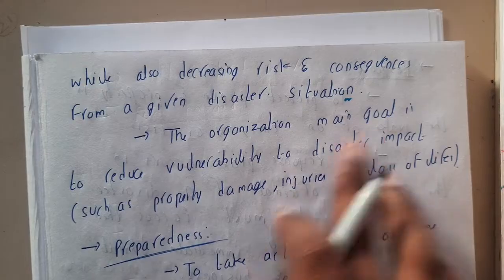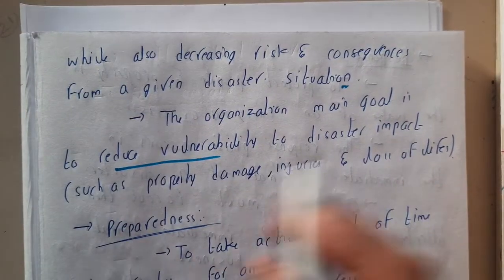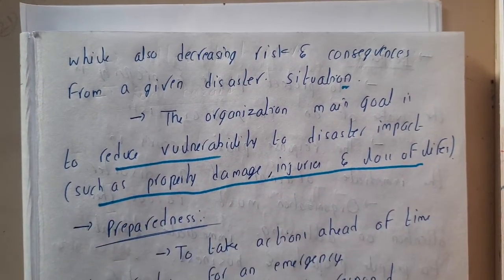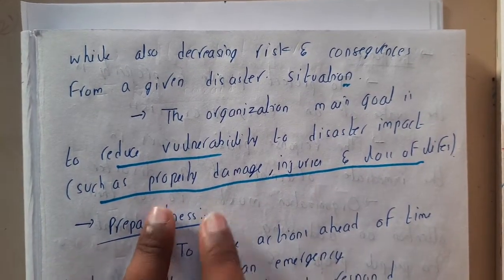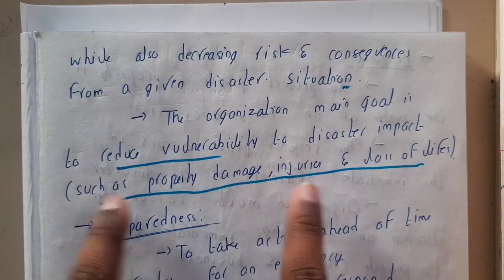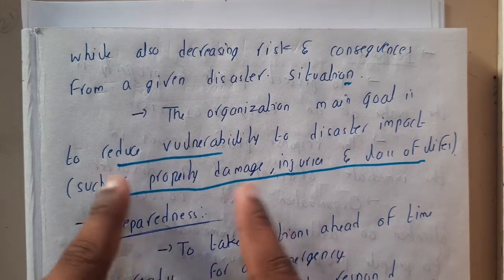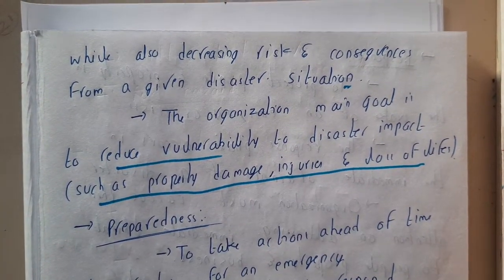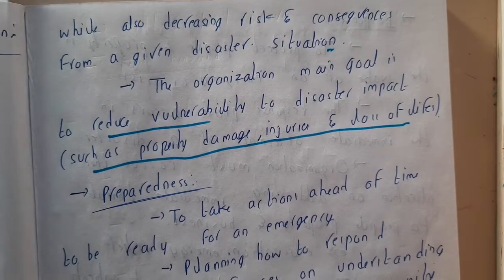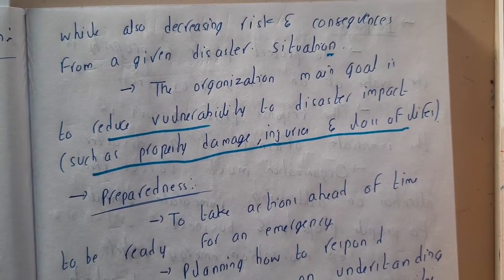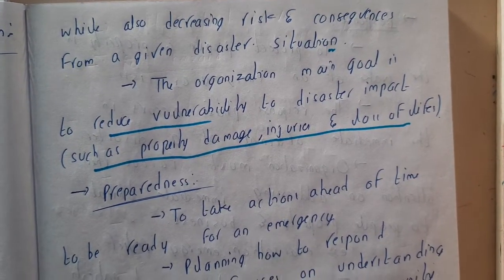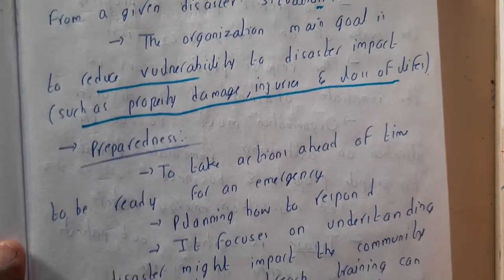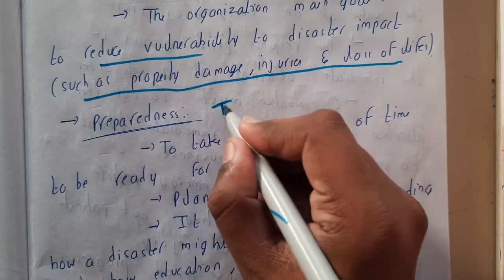The organization's main goal is to reduce the vulnerability of disaster impact — such as property damage, injuries, or loss of life. These are the major effects we want to reduce for the future. The main goal of mitigation is to reduce these values. Simply remember it as: preventing something bad from happening, or reducing its effect — that is mitigation or prevention.